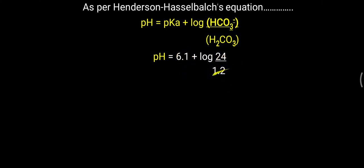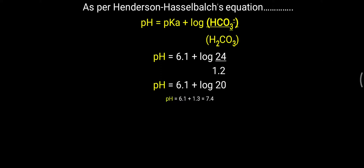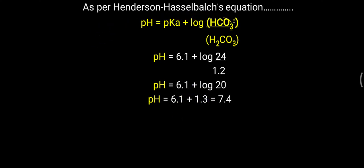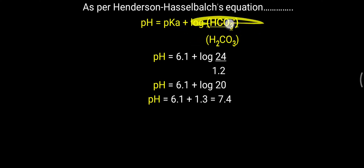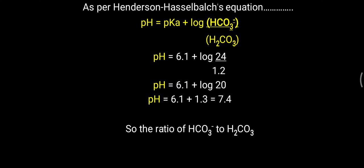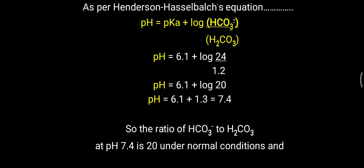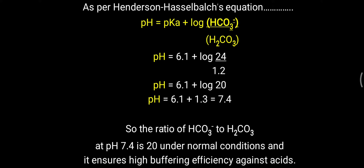Log(24/1.2) = log(20) = 1.3. Adding this to the pKa value of 6.1 gives a pH of 7.4. So the blood pH is maintained by this ratio, mainly through the bicarbonate ion. The ratio of bicarbonate to carbonic acid is 20 under normal conditions at pH 7.4, ensuring high buffering efficiency against acid.